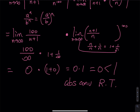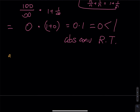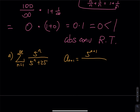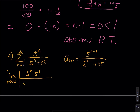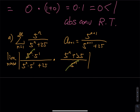Moving on to the last one — the no-conclusion case, which is rare and hard to find in a book, so I made one myself. We have the sum from n=1 to infinity of 5 to the n divided by 5 to the n plus 25. The next term a_{n+1} is 5^(n+1) divided by 5^(n+1) + 25. Set up the ratio: a_{n+1} is 5^n times 5^1 divided by 5^n times 5 plus 25, multiplied by the reciprocal of a_n, which is 5^n + 25 divided by 5^n.